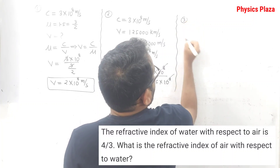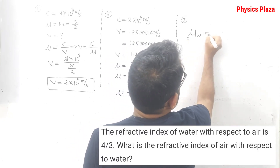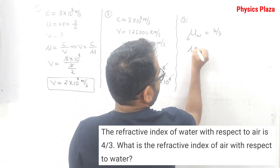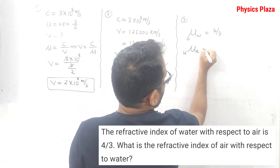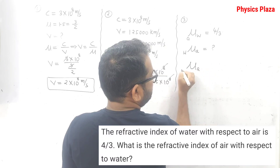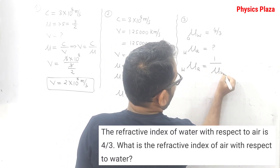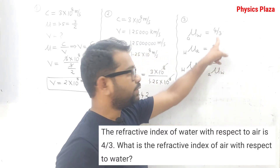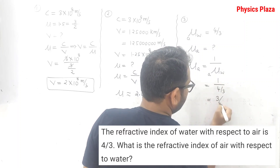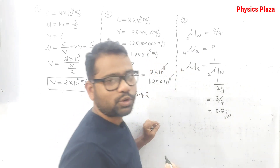Third numerical: refractive index of water with respect to air is given as 4/3. They are asking us to calculate the refractive index of air with respect to water. According to the principle of reversibility, the refractive index of air with respect to water equals the reciprocal of the refractive index of water with respect to air. So it is 1 divided by 4/3, which equals 3/4.